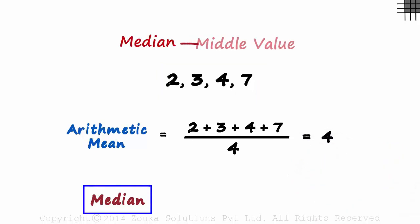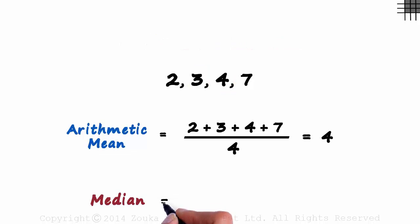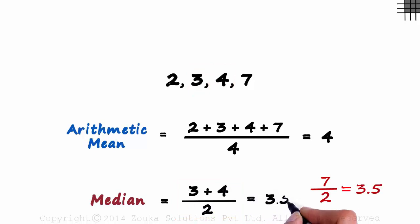The median will be the value in the middle. As we have an even number of terms, the median will be the average of the two terms in the middle. The two numbers in the middle are 3 and 4. The median will be 3 plus 4 divided by 2, that will be 7 divided by 2 which is 3.5. You can see that the mean and the median are different here.